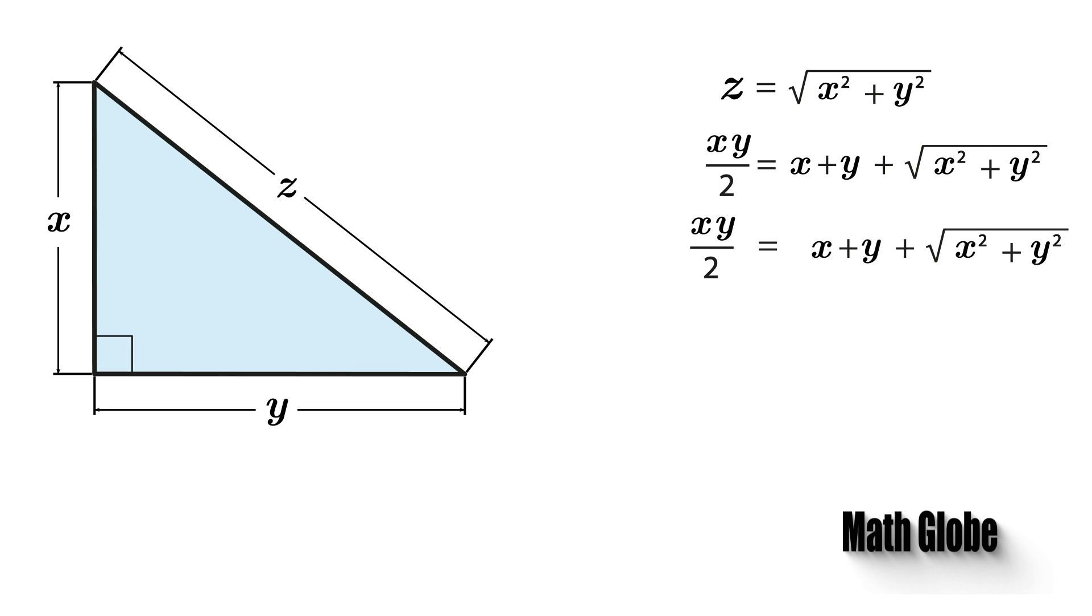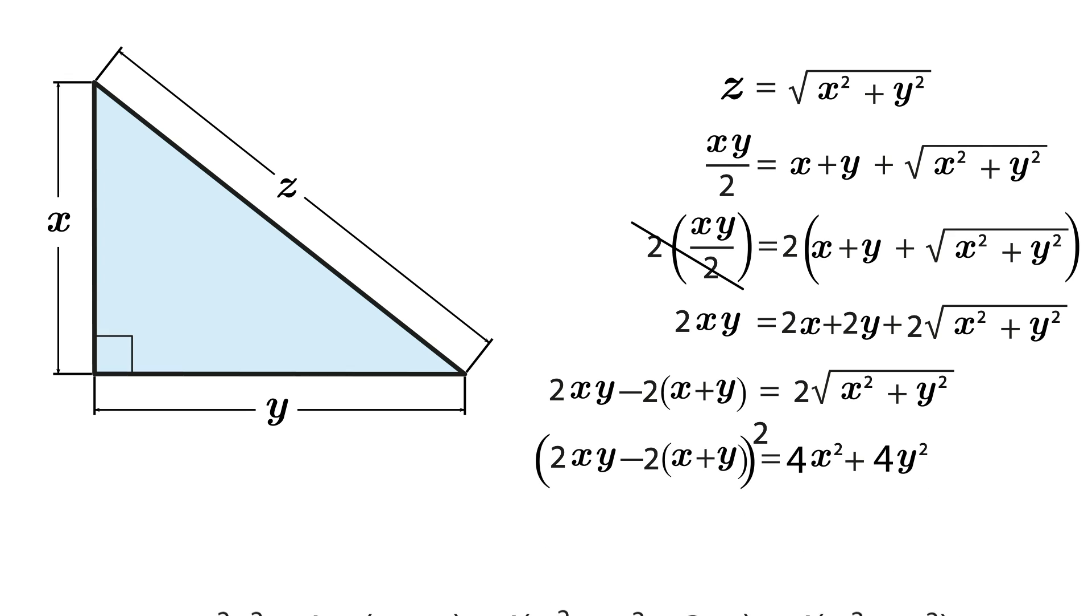So first, let's multiply the equation by 2, then isolate the radical, and square it. As you see, these operations yield the following equations.